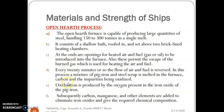Every 20 minutes or so, the flow of air and fuel is reversed. In this process, a mixture of pig iron and steel scrap is melted in the furnace. Oxidation is produced by the oxygen present in the iron oxide of the pig iron. Subsequently, carbon, manganese, and other elements are added to eliminate iron oxide and give the required chemical composition.